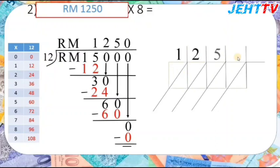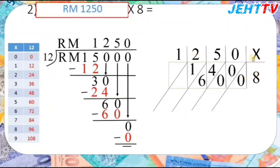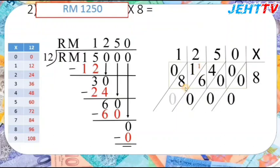We're not finished yet — we still have the multiplication: 1,250 multiplied by 8. So 8 times 0 is 0, 8 times 5 is 40, 8 times 2 is 16, 8 times 1 is 8. Adding up: 0, 0, then 0 plus 4 plus 6 equals 10, then 1 plus 1 plus 8 equals 10, and finally 1 plus 0 is 1. So the answer is RM10,000.